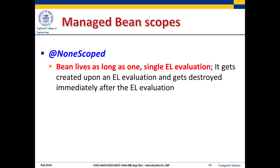Just to review scoping: the idea is how long does a bean object last, when does it get created, when does it get destroyed, and who has access to it. There are scopes ranging from the most specific and shortest-lived to the most general and longest-lived. We go from non-scoped to application scoped with others in between. If you needed one bean that lived just for the length of a single expression language evaluation, that's what non-scoped is for — though that's rare.